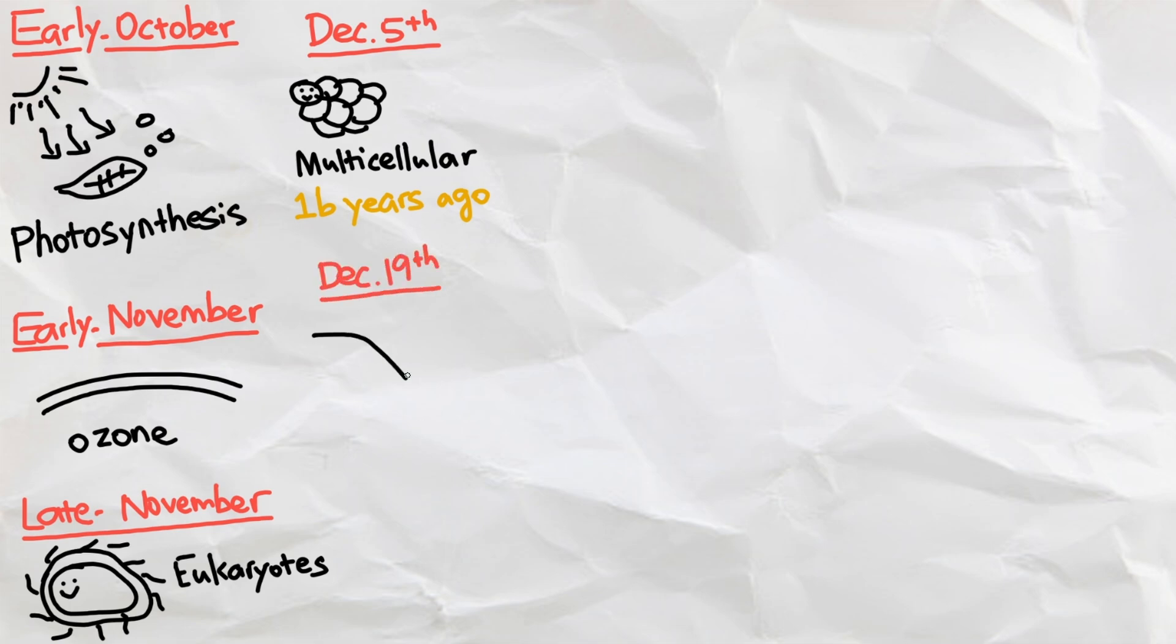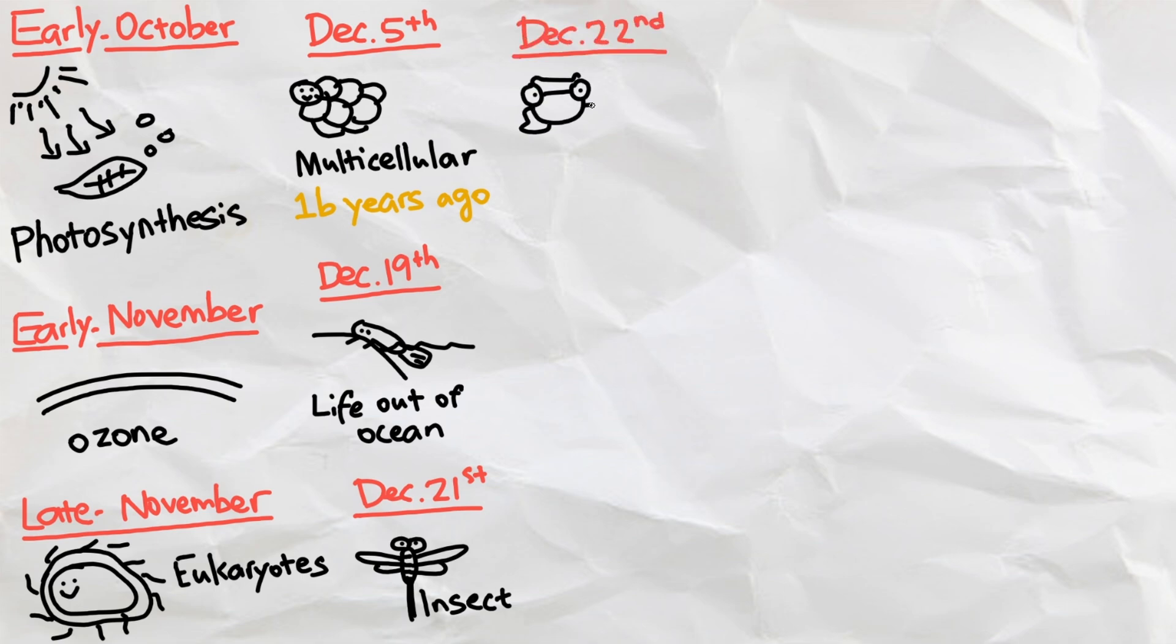On December 19th, life crawled out of the ocean, evolving into insects on the 21st, amphibians on the 22nd, and reptiles on the 23rd.